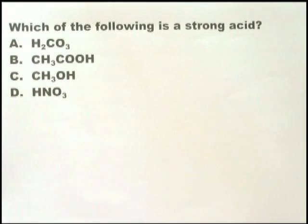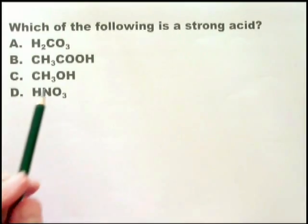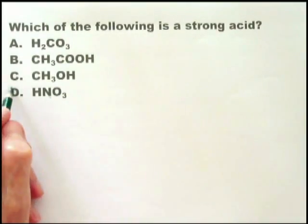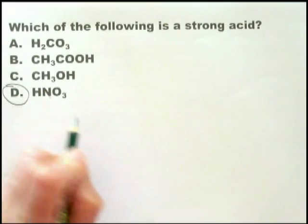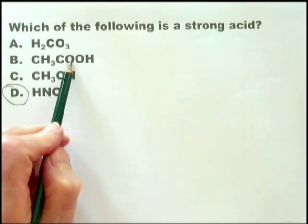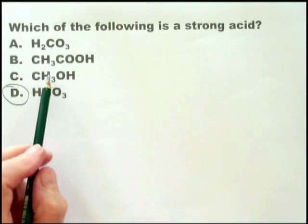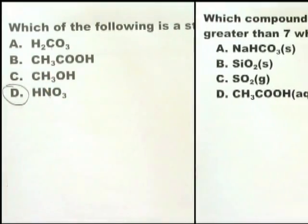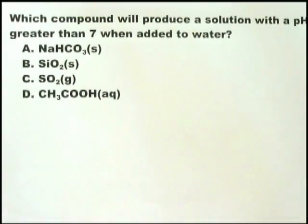This is the opposite of the previous one. You're expected to know, you should know, that nitric acid is a strong acid. Carbonic acid, that's a weak acid. Ethanoic acid, that's a weak acid. And this, of course, is methanol, not an acid at all. Another question which I see as an easy one.